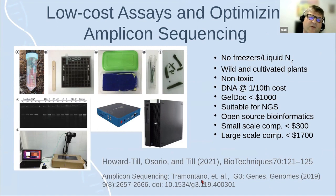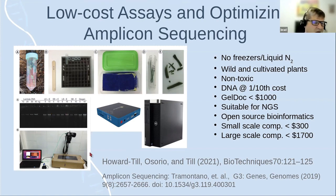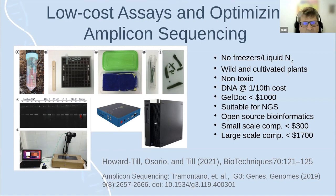A passion of mine is getting tools and methods to everyone around the world regardless of budget and lab infrastructure. We've worked to make things low-cost, non-toxic, and accessible. A 2021 BioTechniques paper describes: you don't need liquid nitrogen — collect on silica; make your own DNA extraction kit at one-tenth the cost of a commercial kit; photograph gels using a cardboard box and blue LED lights. Computers are getting cheap — we're buying a new workstation with 512 gigabytes of RAM for about $1,700 USD. DNA sequencing now just means putting DNA in a tube and sending it to a company.